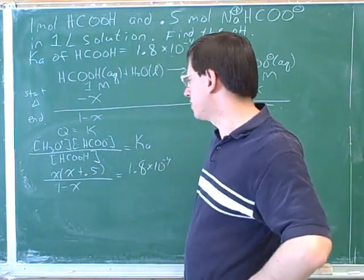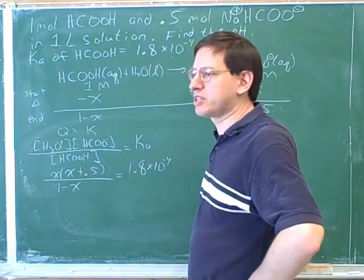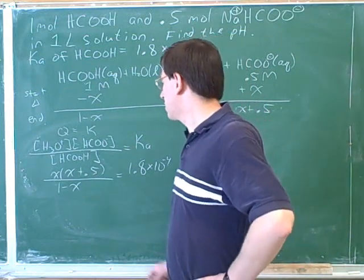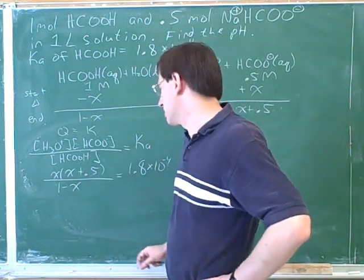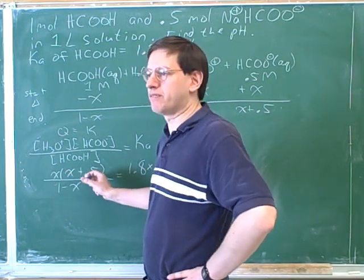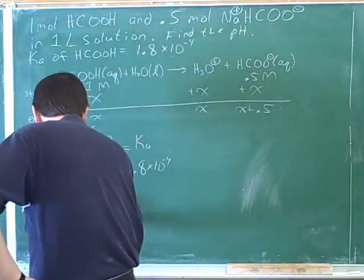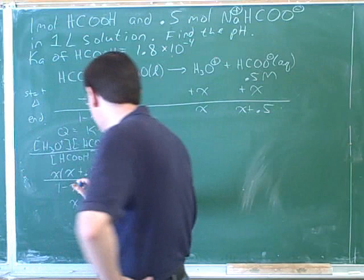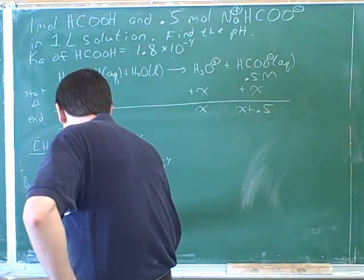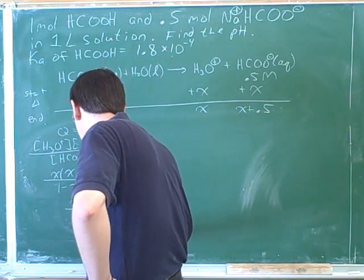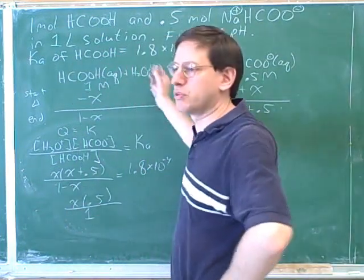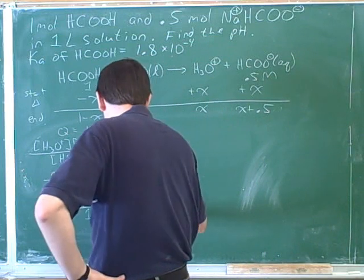Here's the equation we have so far. This would be like a cubic equation unless we start making some approximations. x here is probably much smaller than 0.5, so we can approximate that as just 0.5. And the denominator — how should I approximate the bottom? Just 1, because x is probably much smaller than 1, since this is a weak acid with a weak conjugate.